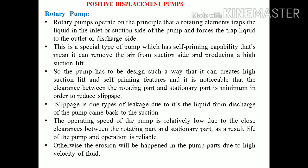Now I am coming to the positive displacement rotary pump. The key element of the rotary pump is that a rotating element traps the liquid at the inlet or suction side of the pump and forces the trapped liquid to the outlet or discharge. This is the basic principle of any type of rotary pump — there must be a rotating element. This is a special type of pump which has self-priming capability, meaning it can remove air from the suction side and produce a high suction lift. In the case of a centrifugal pump it has no self-priming capacity and you have to prime it before operation, but the rotary pump has self-priming operation.